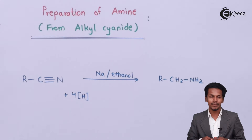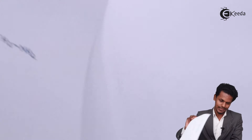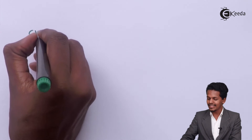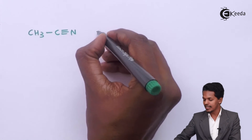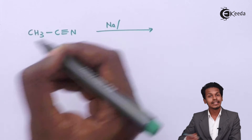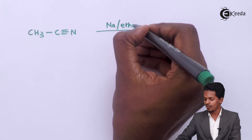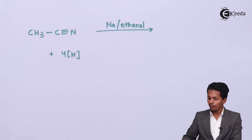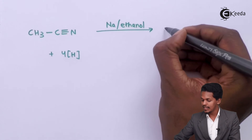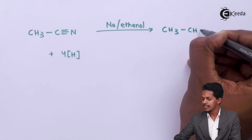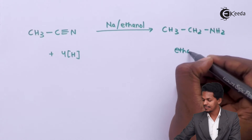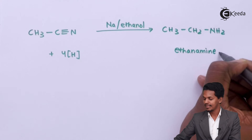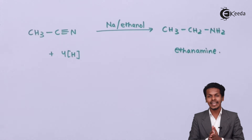For example, consider methyl cyanide: CH₃-C≡N. We react it with sodium and ethanol (or alcohol), which gives four moles of nascent hydrogen. Because of this, CH₃CN is converted into CH₃-CH₂-NH₂. The name of this product is ethylamine.